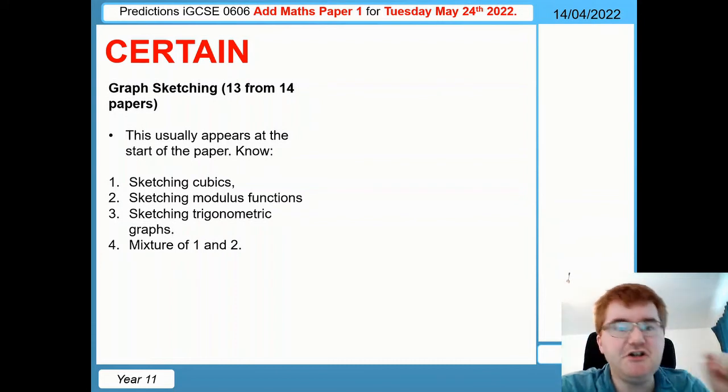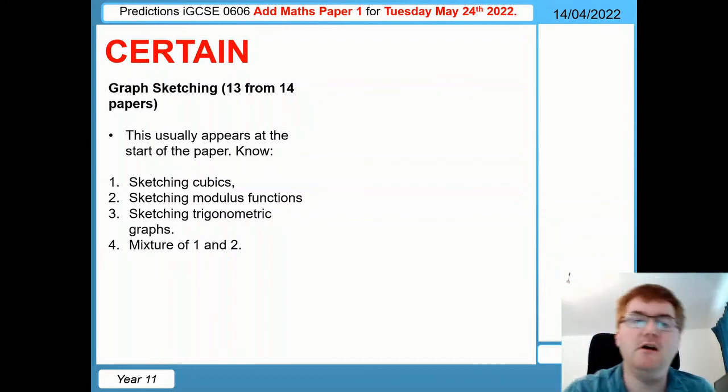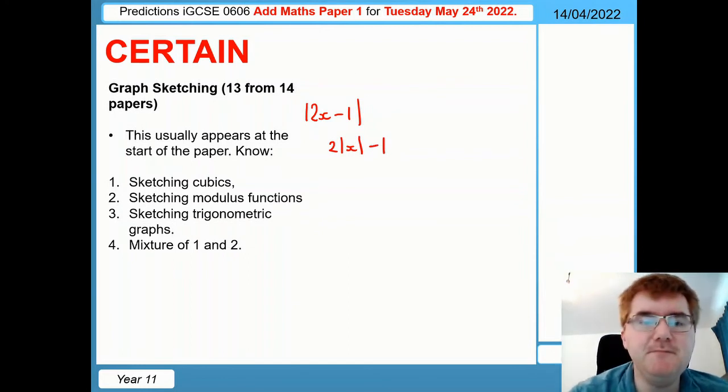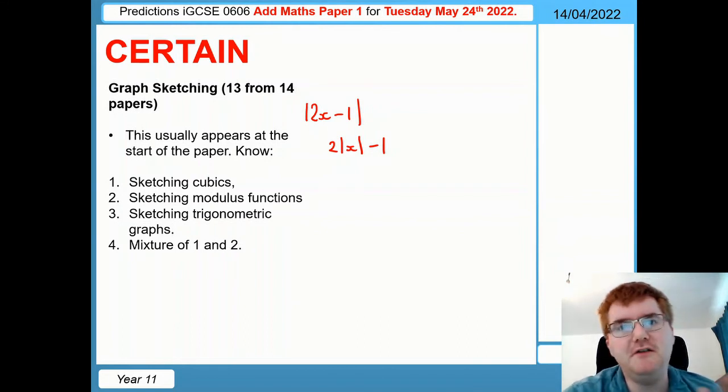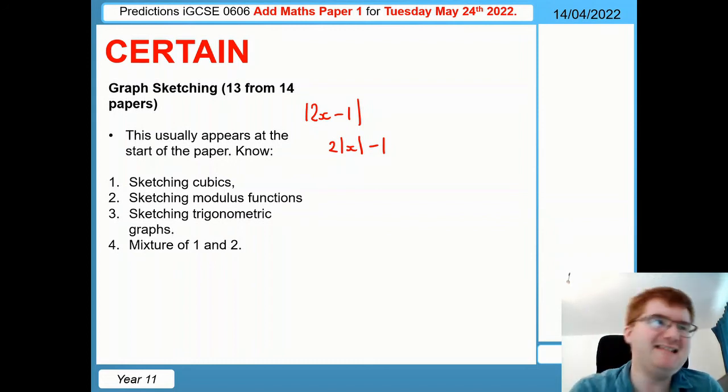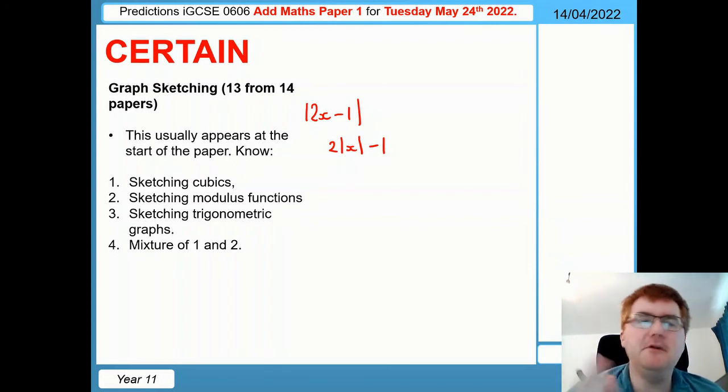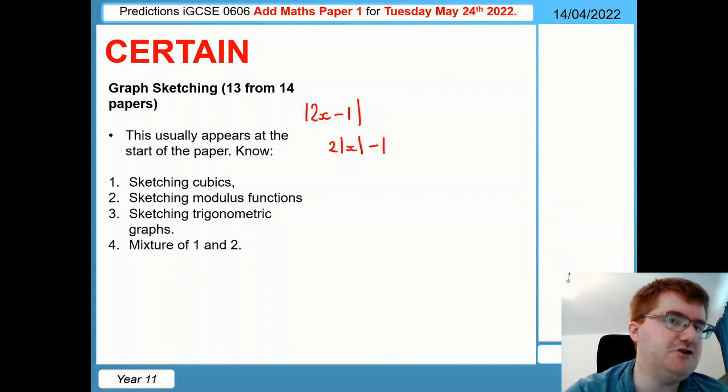Sketching modulus functions - knowing how that works, for example. What would be the difference between sketching this, for example, and then sketching this? So knowing the difference and applying that into a more complicated question. Sketching trig functions as well - that comes in the sinusoidal modelling I mentioned right on the very first slide, so that's kind of a crossover. Graph sketching, sinusoidal modelling. Again, that's kind of a separate topic - you have the amplitude and period, etc. And then also a mixture of one and two here. So say they give you a cubic function, but they put modular signs around it. How does that actually affect what the graph looks like? I've seen a couple of questions like that.